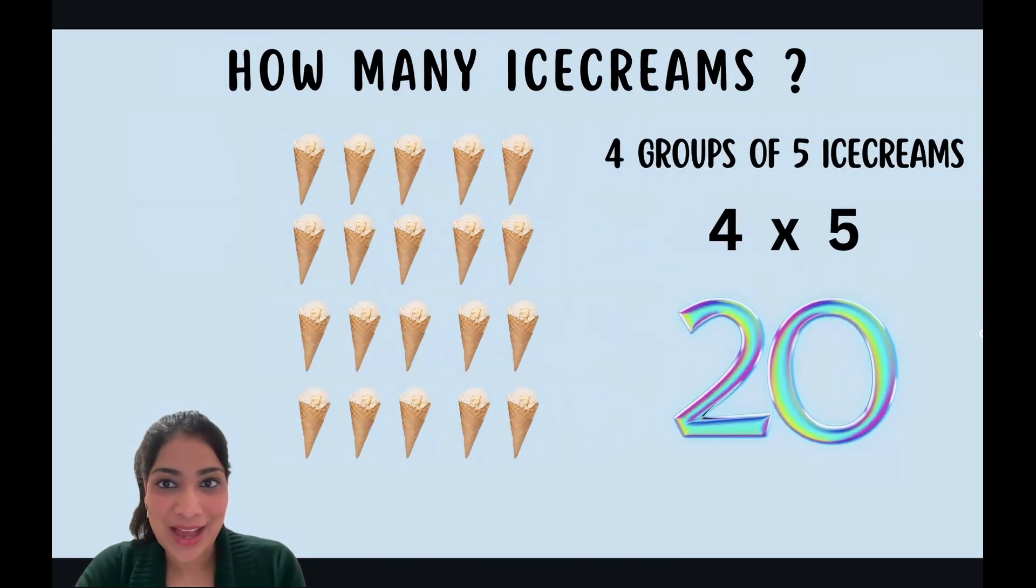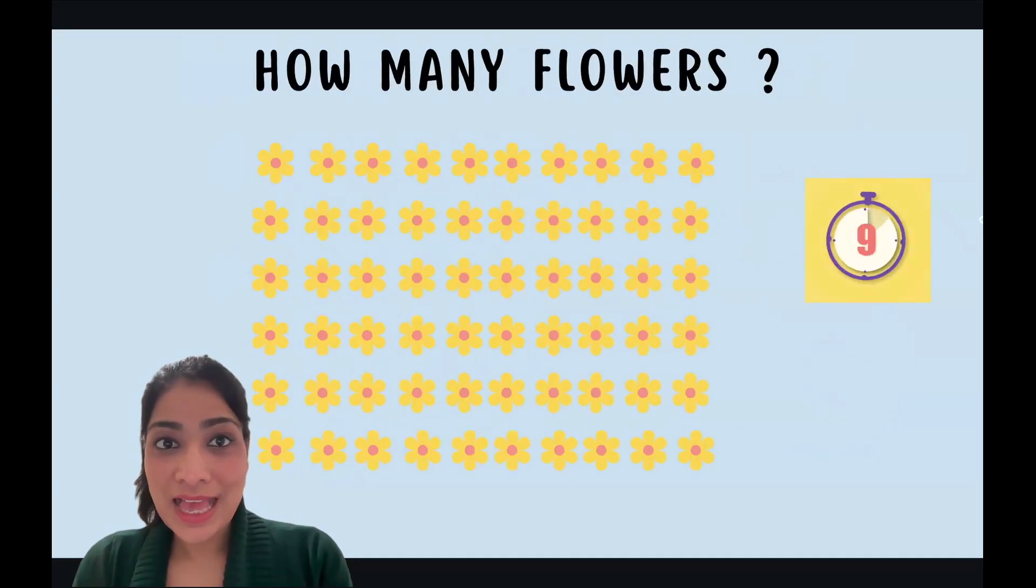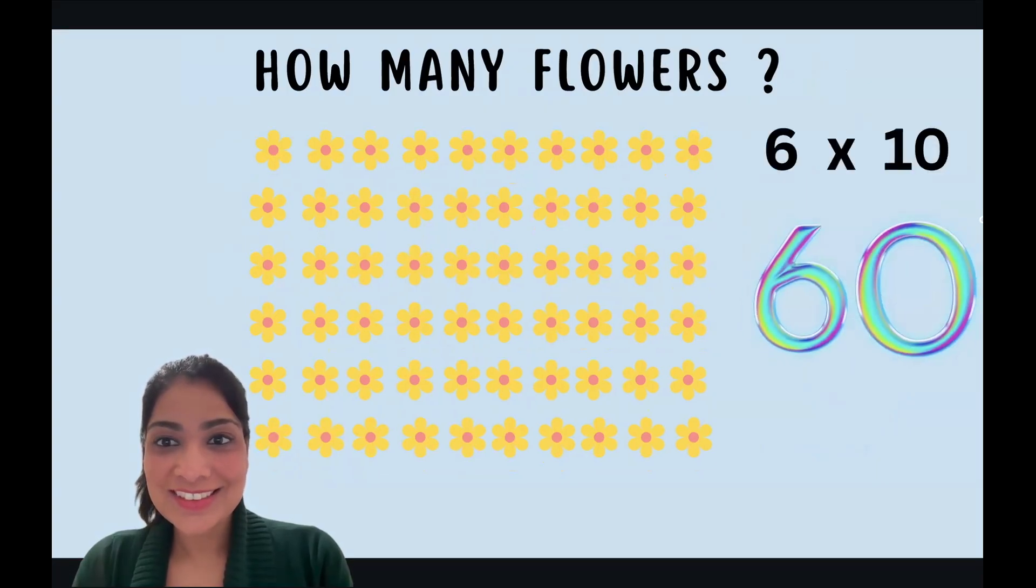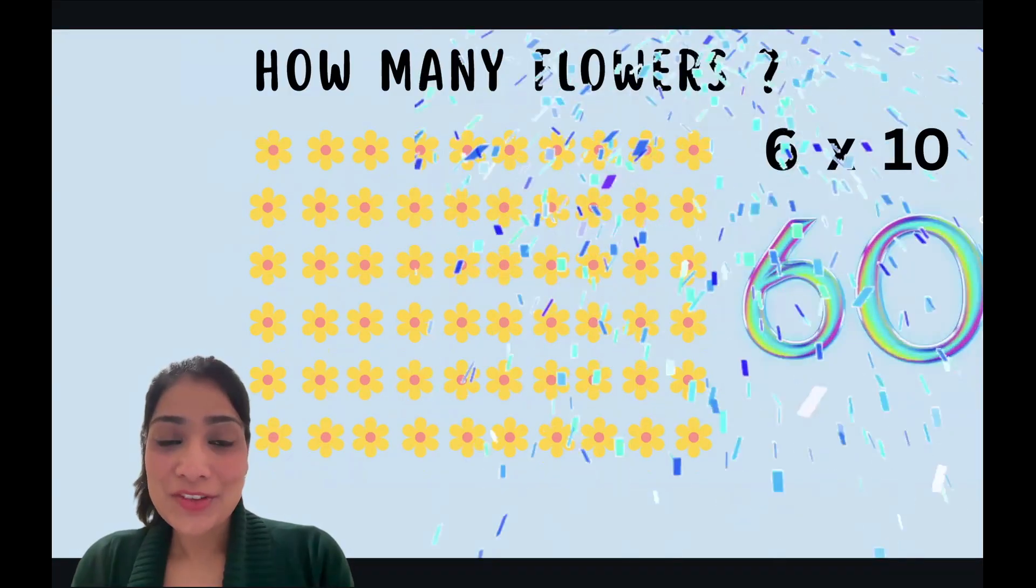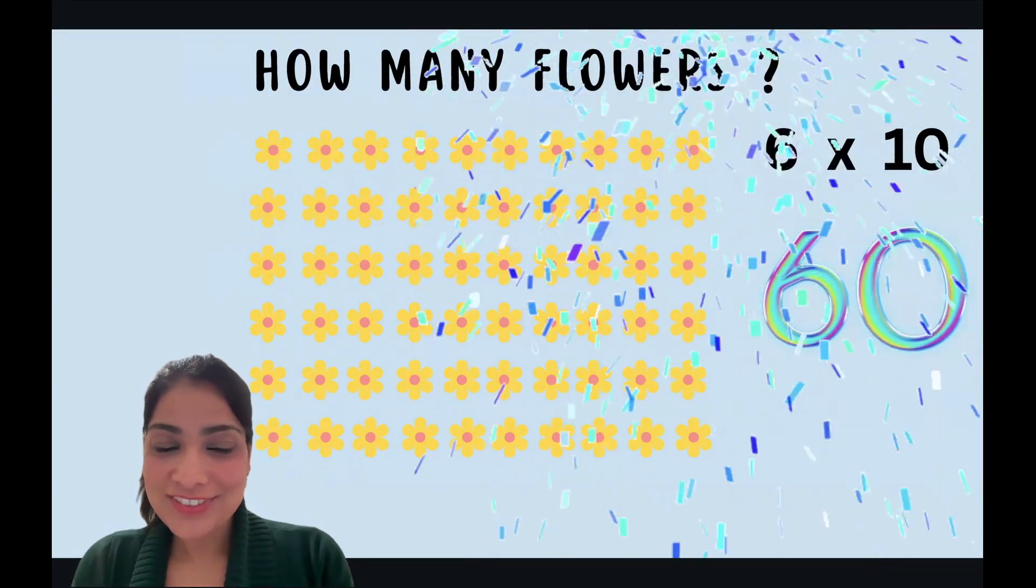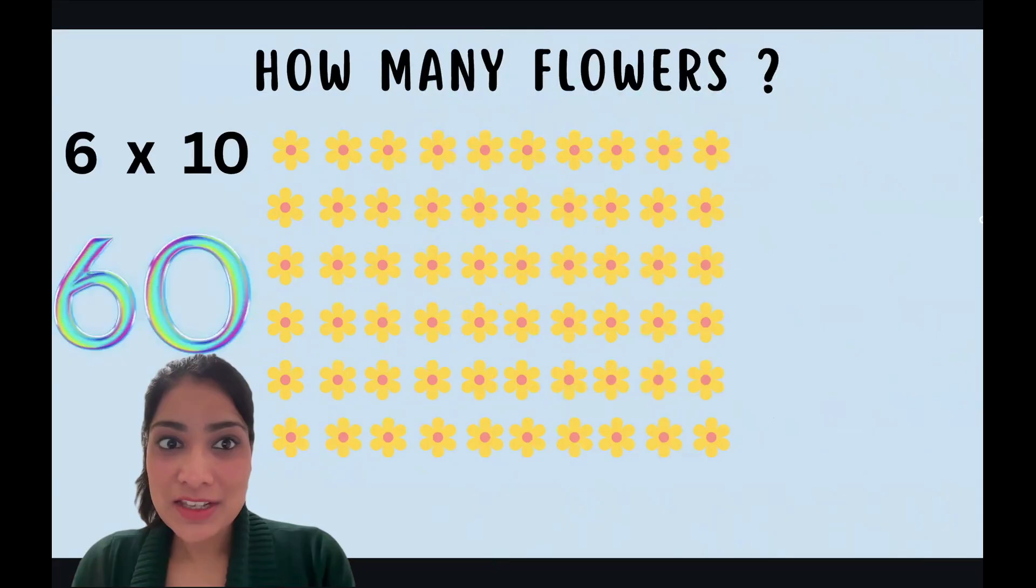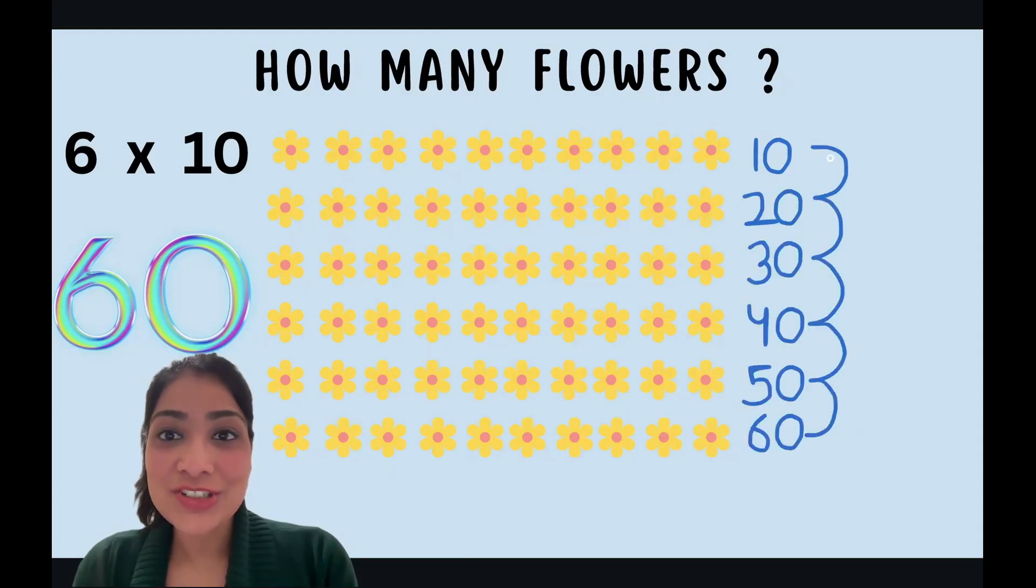Great job guys. It's your turn now. How many flowers? If you need more time, you can always pause and try it out. Sixty. Okay, do you want to verify it together? Let's do that. How many flowers are there in our first row? Let's count: one, two, three, four, five, six, seven, eight, nine, ten. There are ten flowers. Let's do skip counting this time: 10, 20, 30, 40, 50, 60. There are total 60 flowers. Great.